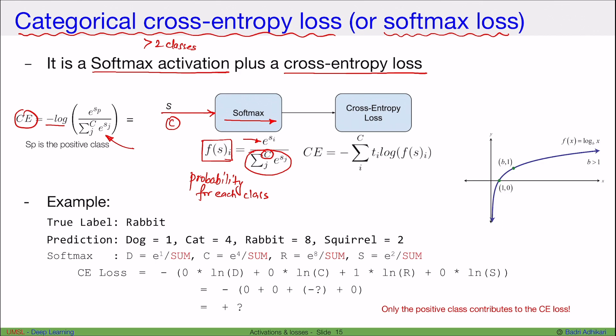Then once we have the output of this softmax, the next step is to calculate the cross-entropy. And cross-entropy is simply negative of the log of this probability for the true labeled class. So for all other classes, this t_i becomes zero, but for the class that's the true label, this will be a one. Now, here's an example.